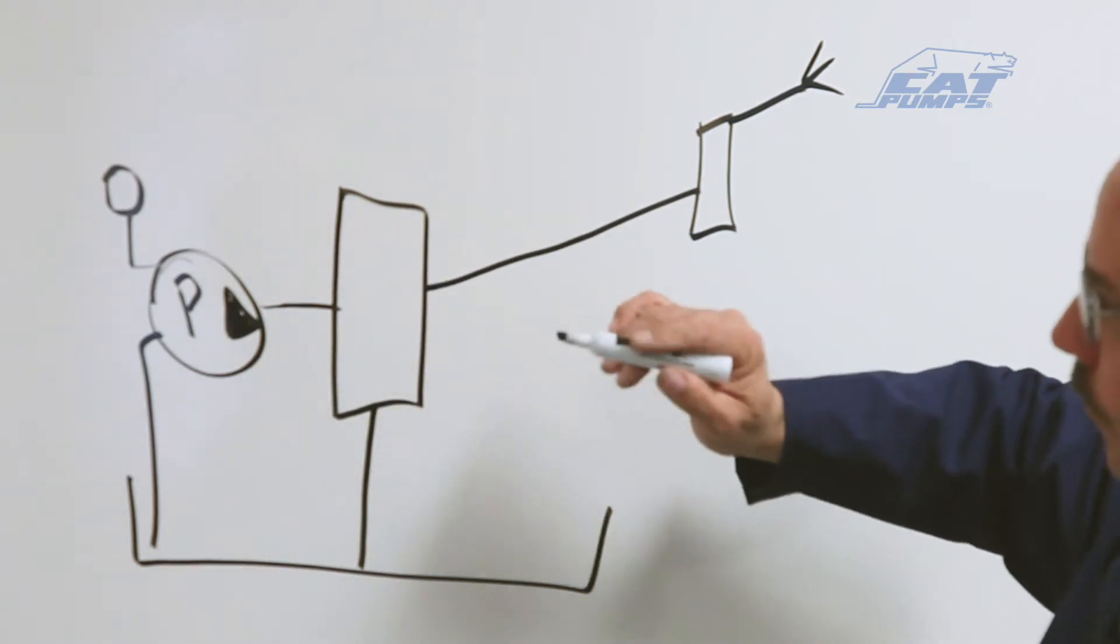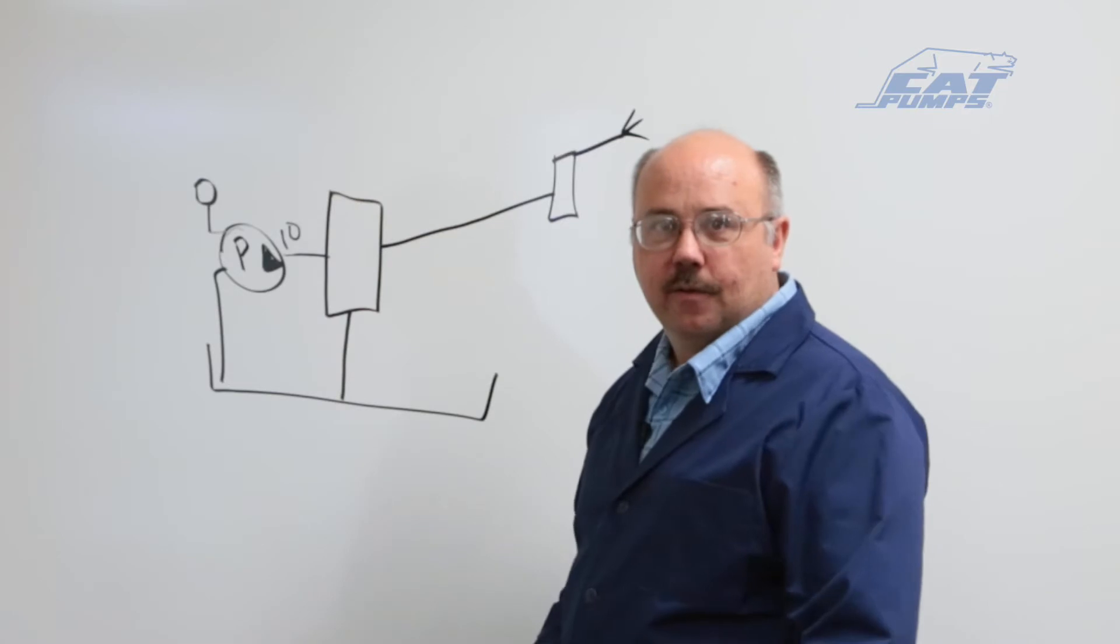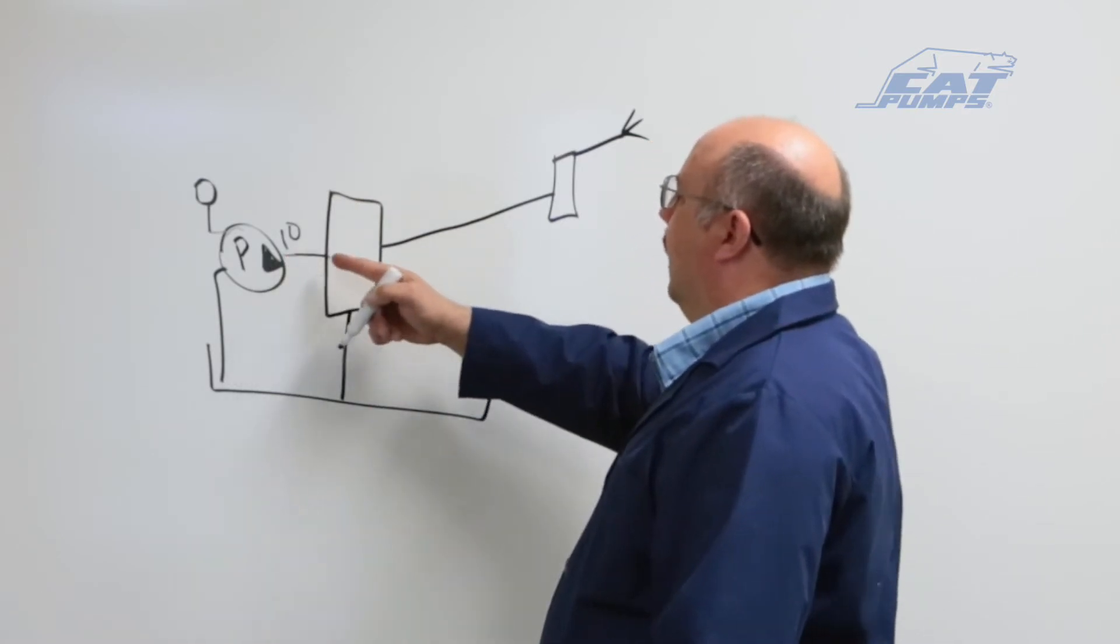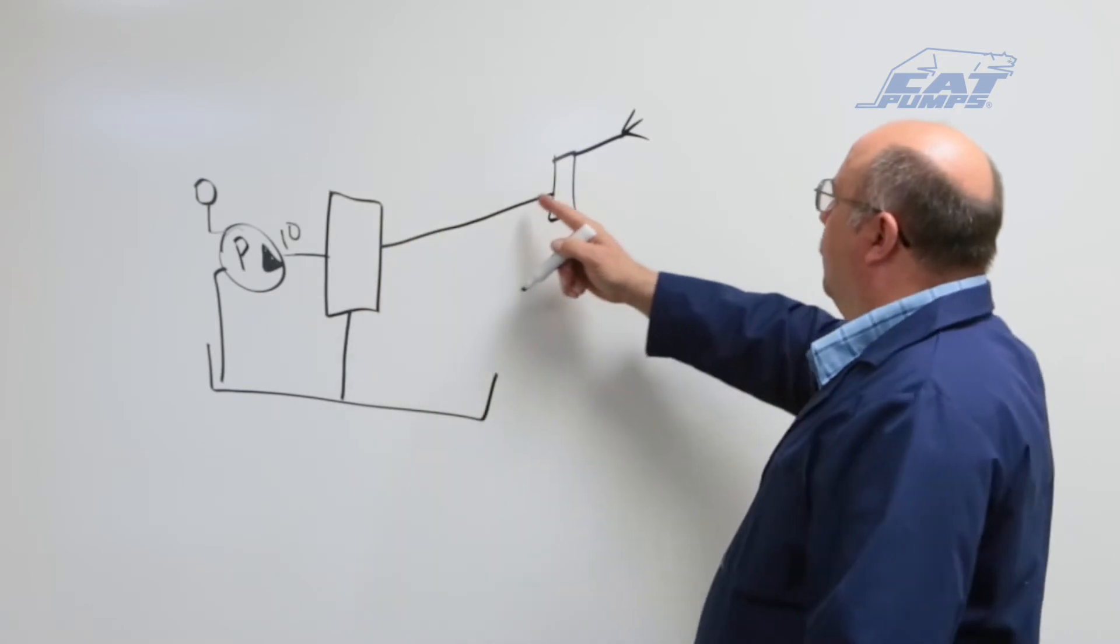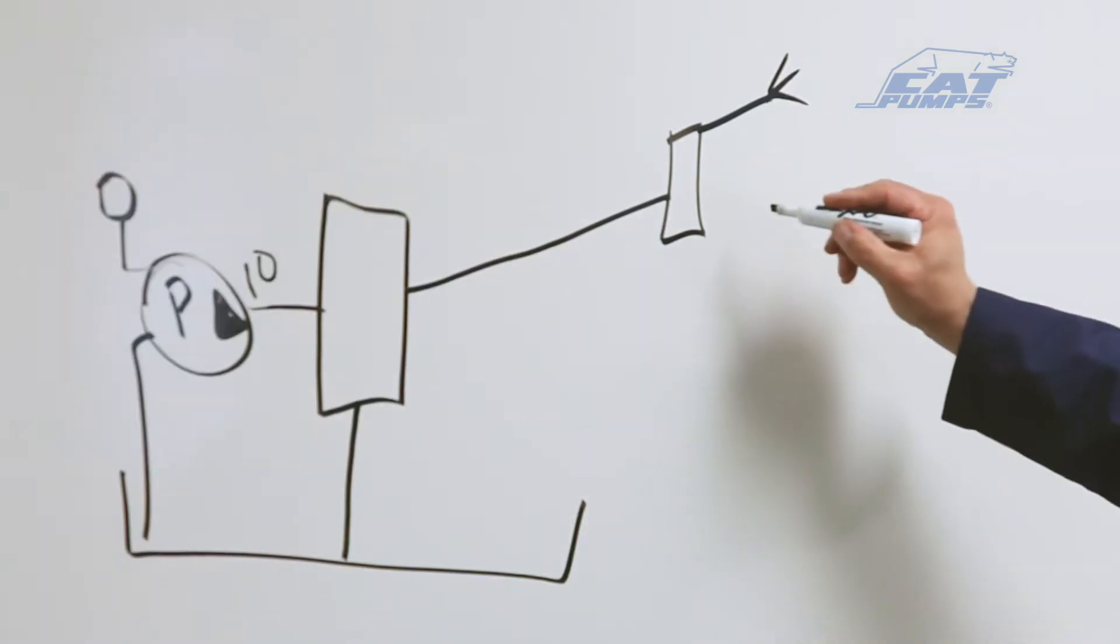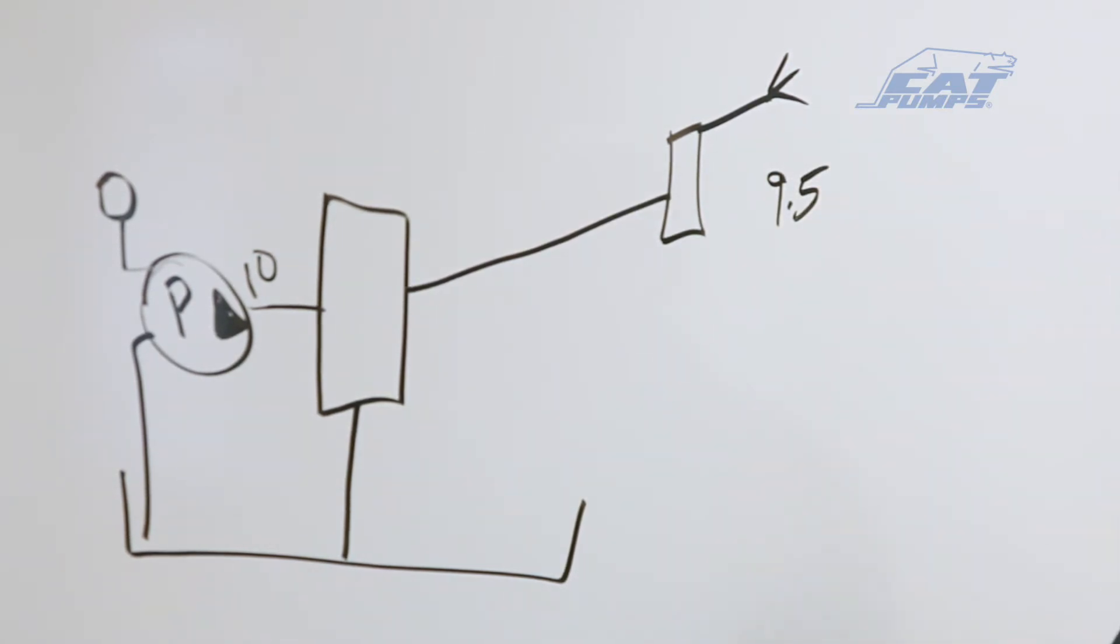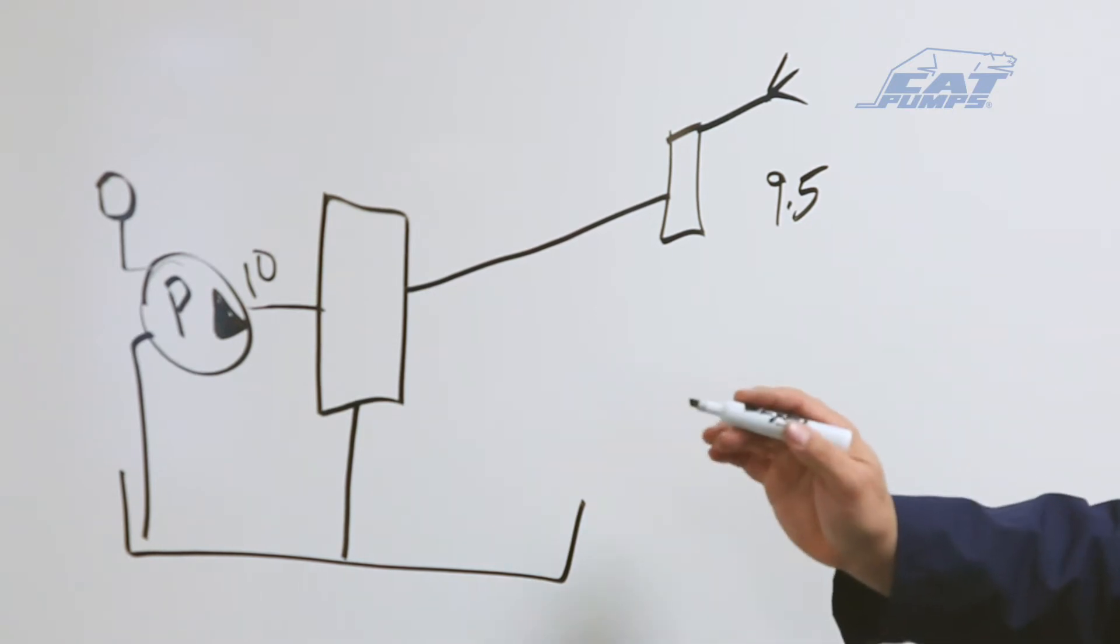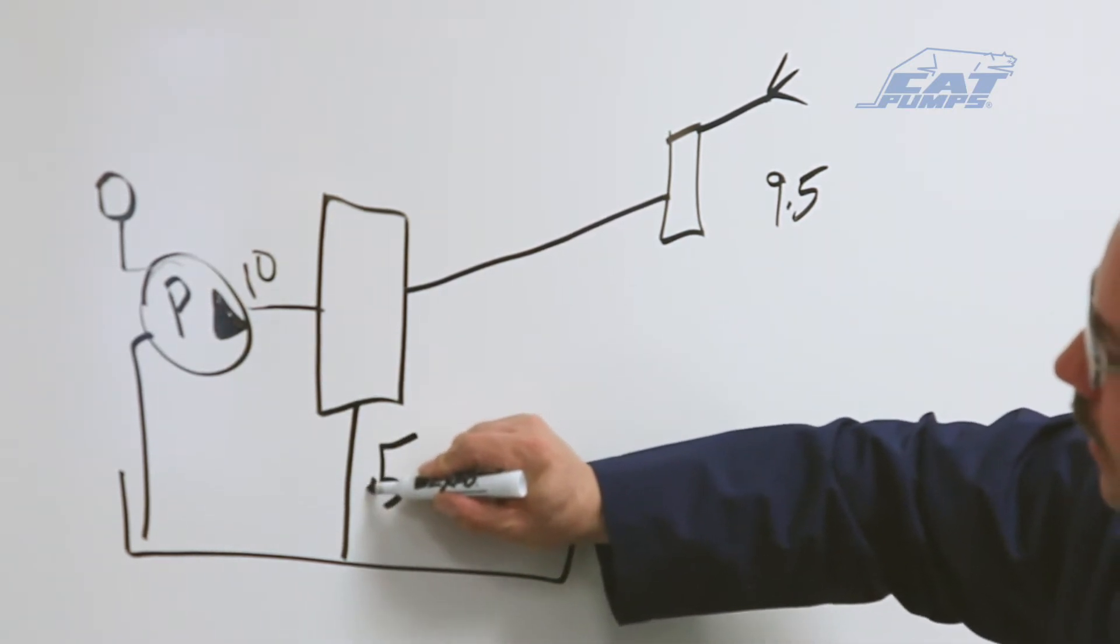And typically, for example, we're going to run a 10 gallons a minute pump. So I'll put a 10 there to represent the flow in this line, the water coming out of the pump. And then the water that goes up to the trigger gun will usually take most of the water flow. So in this example we're going to do 9.5 gallons out the nozzle which would leave us with a half of a gallon a minute going down the bypass.